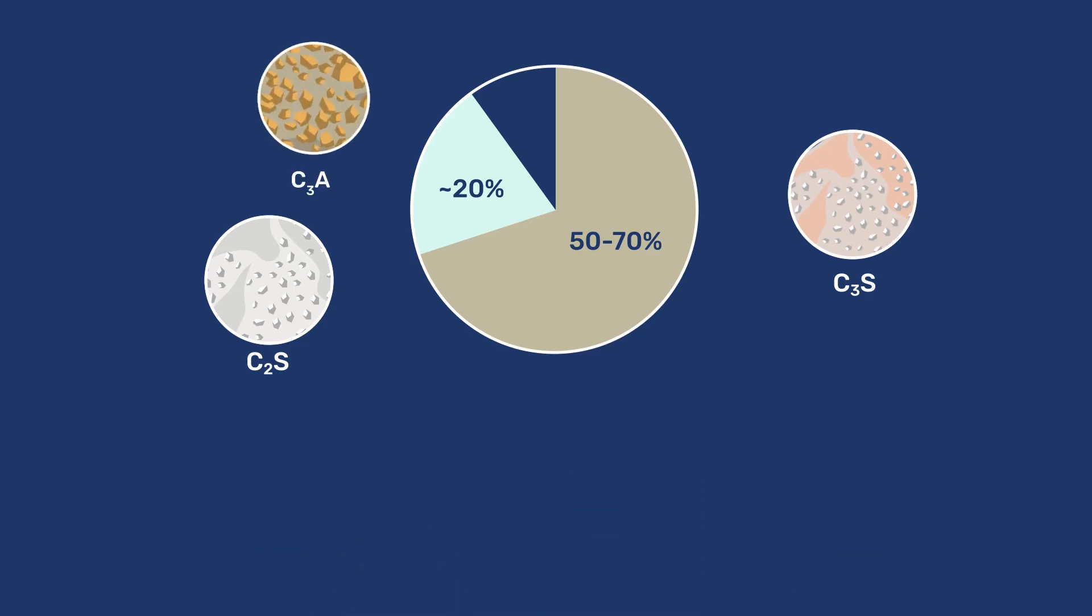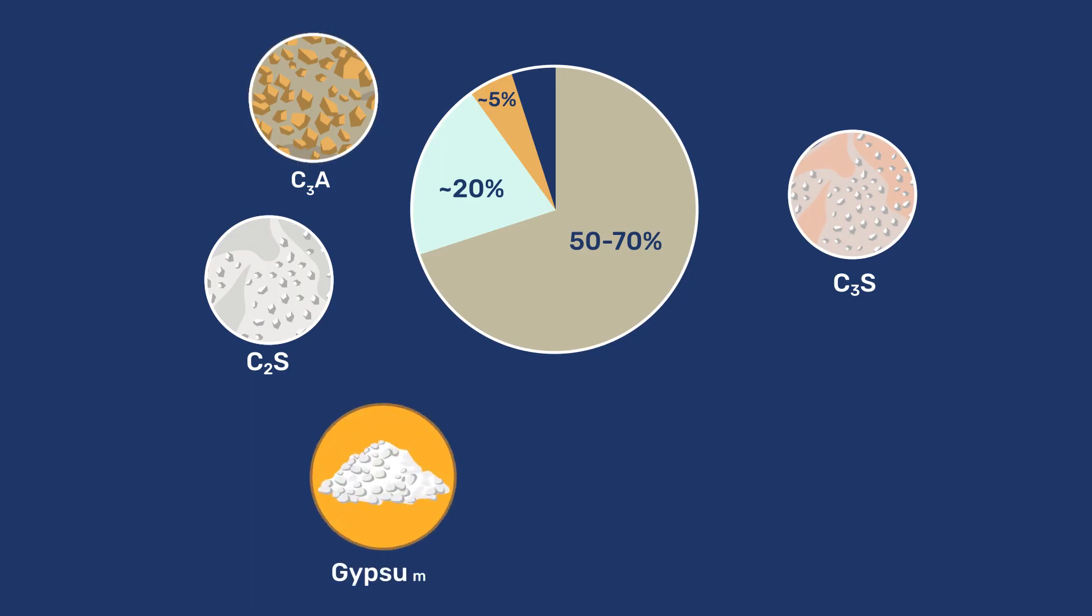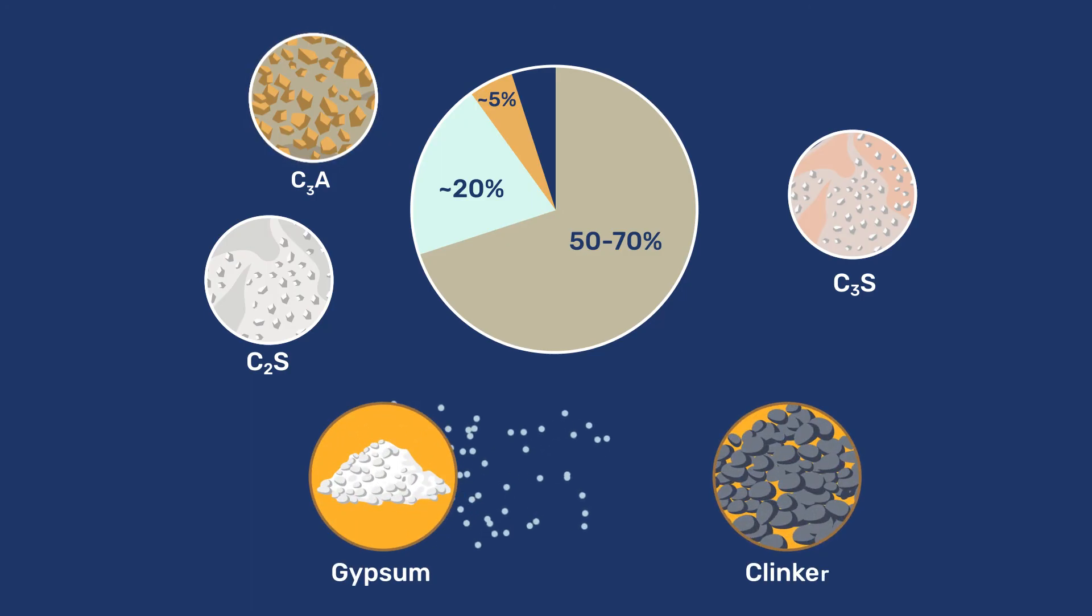Tricalcium aluminate only represents about 5% of the clinker, but is nevertheless very important because it is the most reactive clinker phase. Its reaction is controlled by the gypsum, which prevents it from causing workability loss and/or a delay of the C3S hydration, as explained in a separate video.